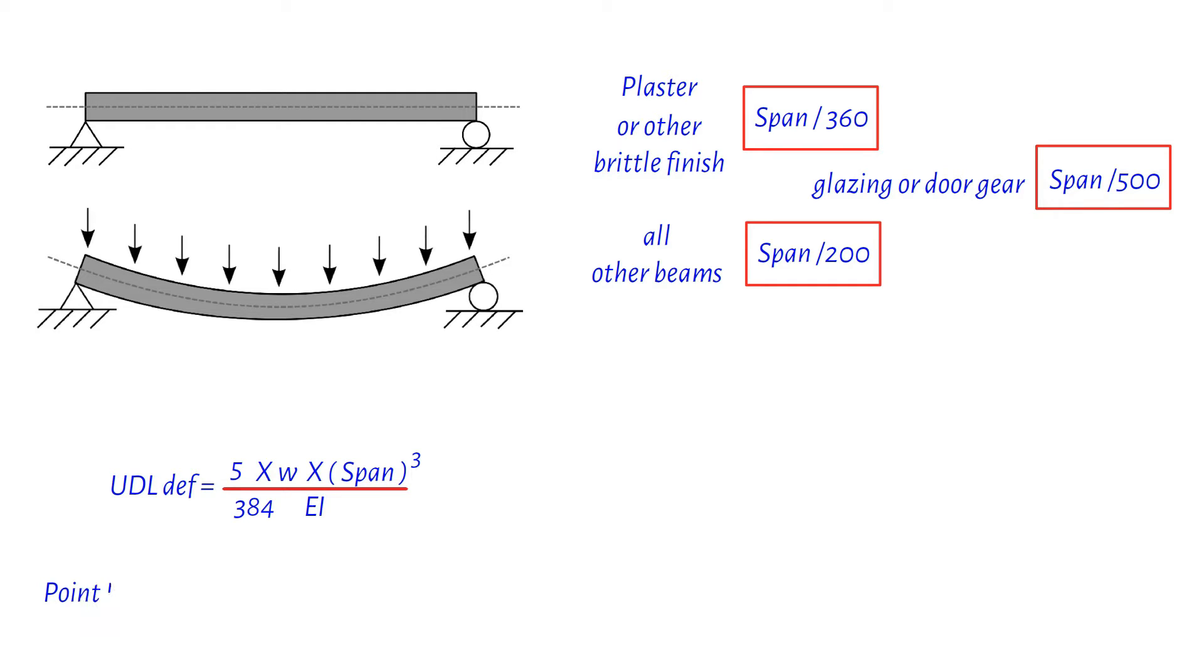For a load right in the middle, it's similar. 1 divided by 48, multiply by the weight in newtons, and then by the span cubed in millimeters. Divide that by the same constants, and you're golden.